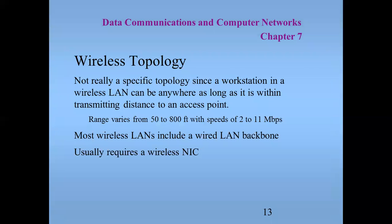Wireless topology is not really a specific topology, since a workstation in a wireless LAN can be anywhere as long as it's within transmitting distance to an access point. The range varies from 50 to 800 feet with speeds of 2 to 11 megabits per second. Most wireless LANs include a wide LAN platform and usually require a wireless LAN NIC.